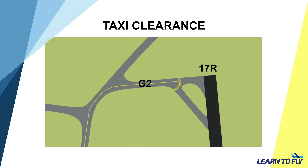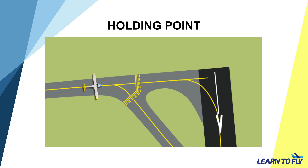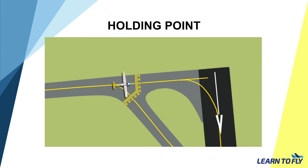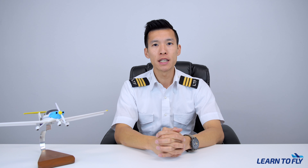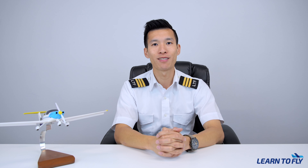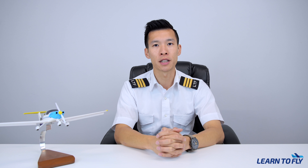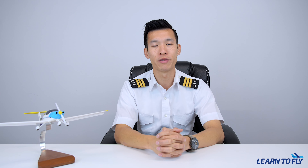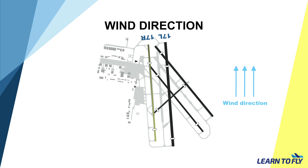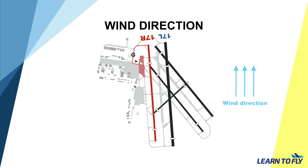I will now demonstrate the standard radio call from the Northern Run-Up Bay: 'Moorabbin Ground, X-Ray Papa Papa, Diamond in the Northern Run-Up Bay with information Papa, dual runway 17R for training area, request taxi.' The response we can expect from ground control would be: 'X-Ray Papa Papa, Moorabbin Ground, taxi to holding point Golf 2, runway 17R.' And the correct readback would be: 'Taxi to holding point Golf 2, runway 17R, X-Ray Papa Papa.' This gives us taxi clearance to leave the Run-Up Bay and taxi to holding point Golf 2, runway 17R. Please ensure not to taxi past the holding point line that connects to the runway strip area — we must not taxi past the holding point line.